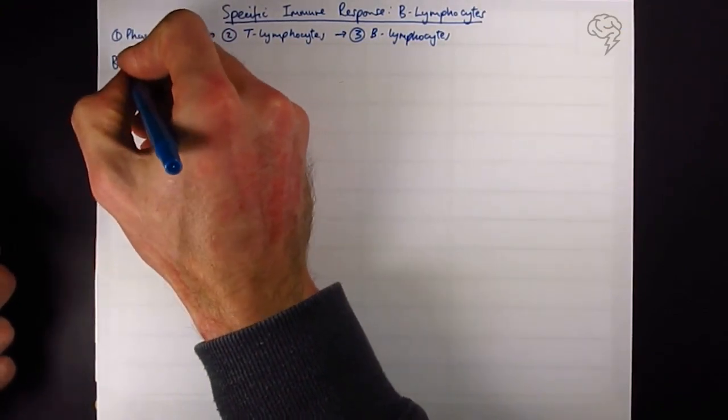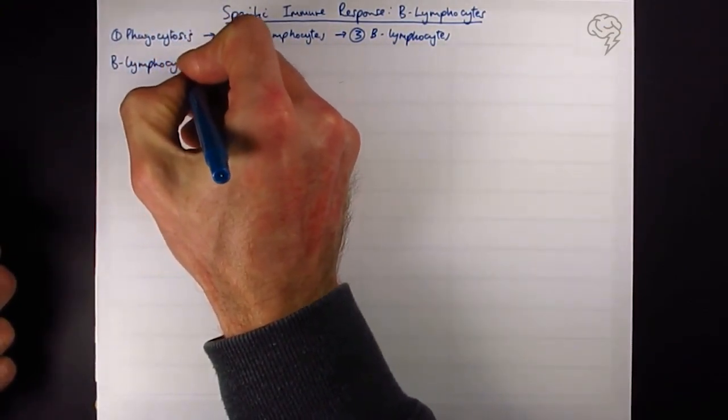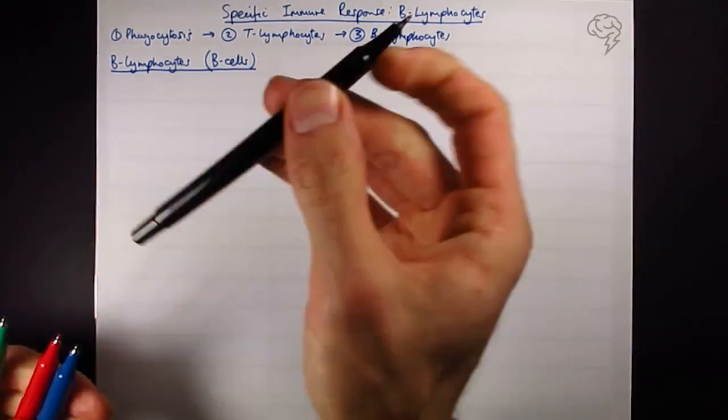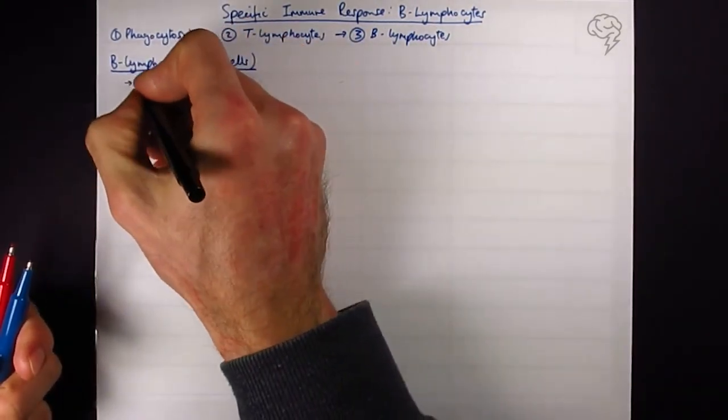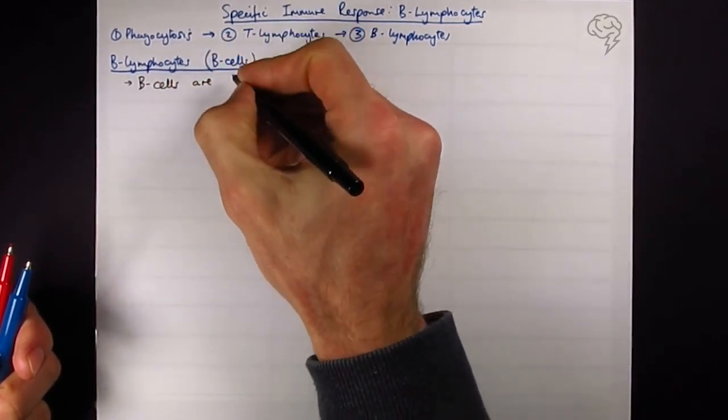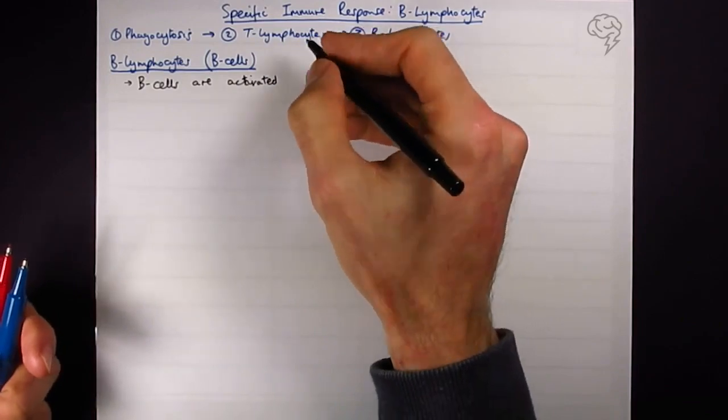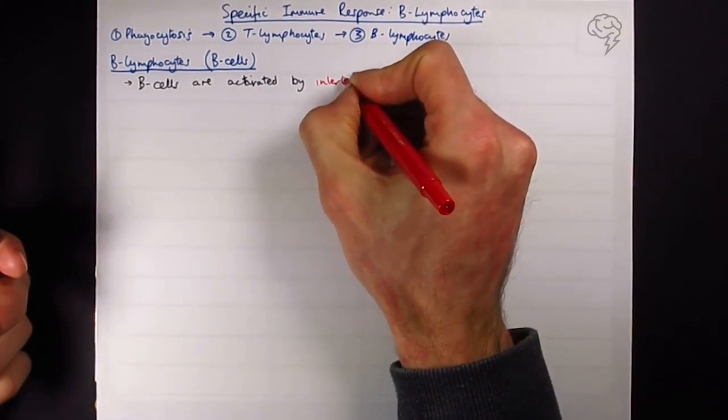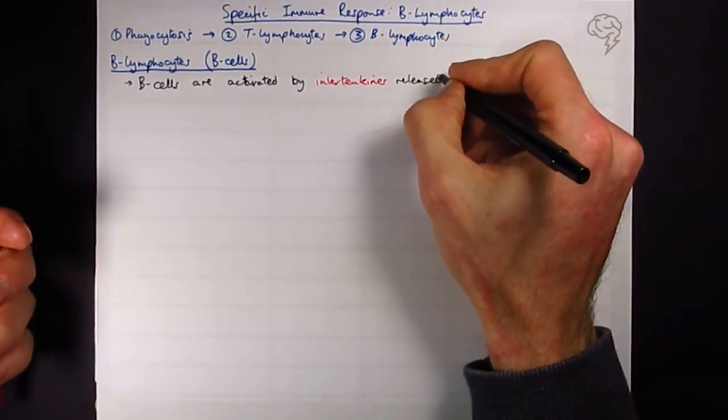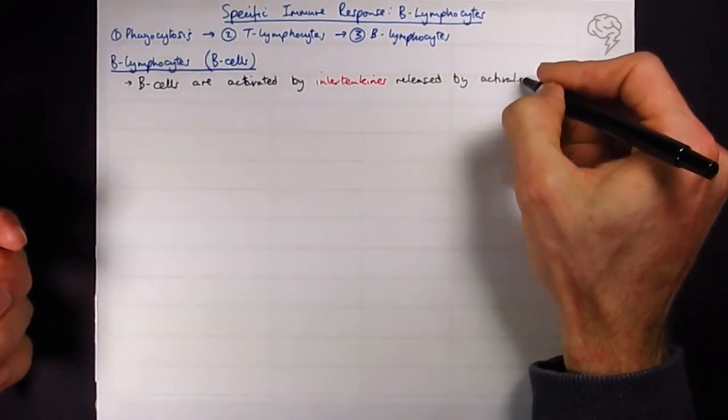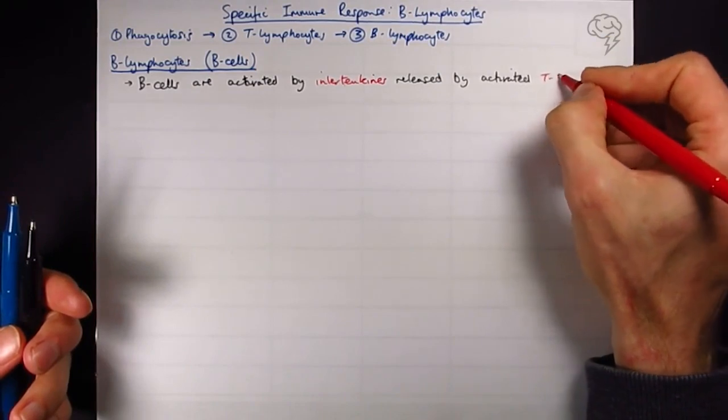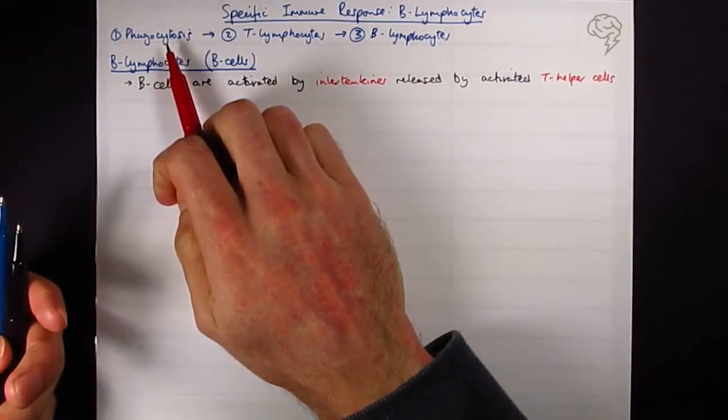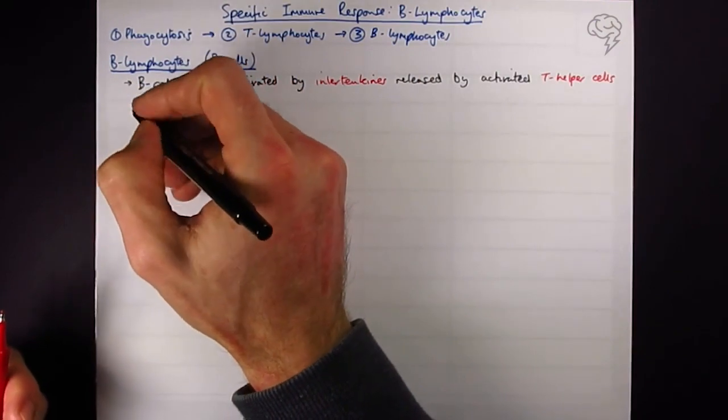Okay then, so B lymphocytes, B cells, are activated by interleukins released by activated helper T cells. How did the helper T cells get activated? Well, that was the phagocytes or the neutrophils presenting the antigens from the pathogen. These are all examples of cell signaling.